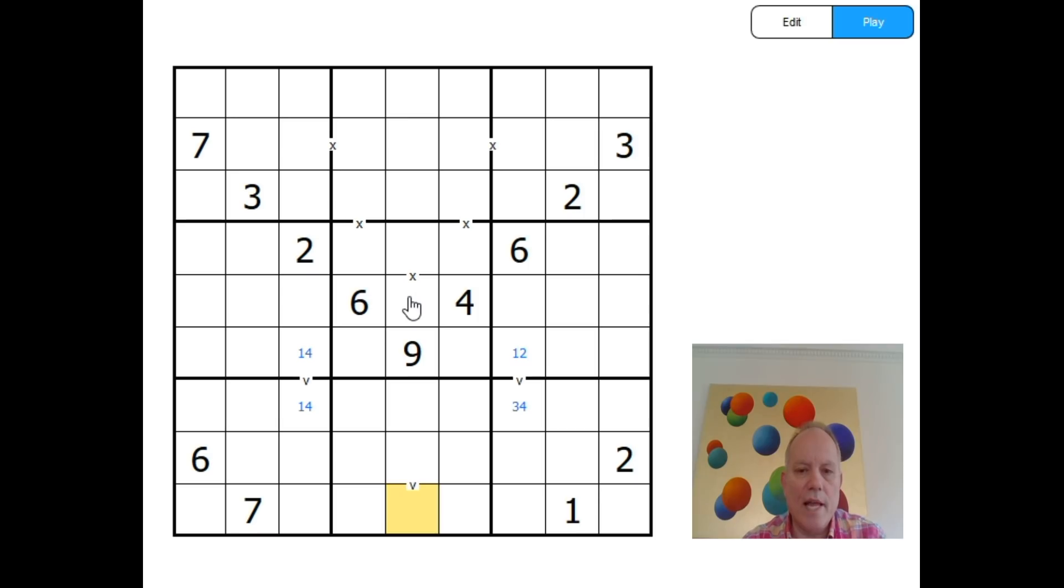Now, looking at some of these Xs, this one here is in a box with a 6 and a 4, so it's not 6-4, and with a 9, so it's not 9-1. So, it could be 8-2 or 3-7, and that would make this one 2, 7, or 8. It can't be 2 on top and 8 below because of this 2.